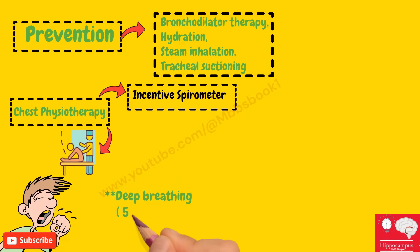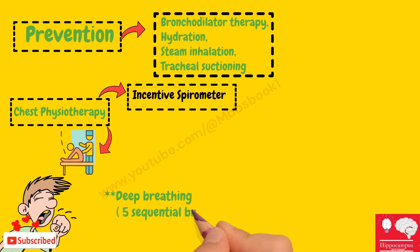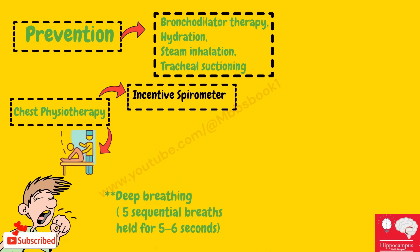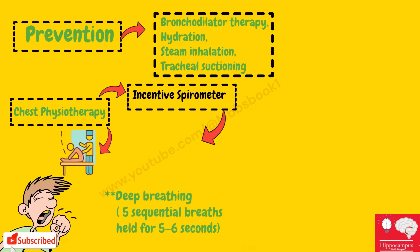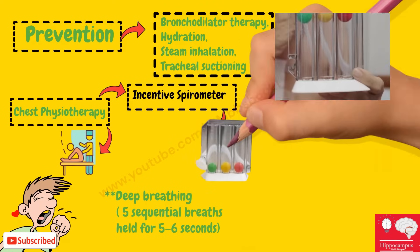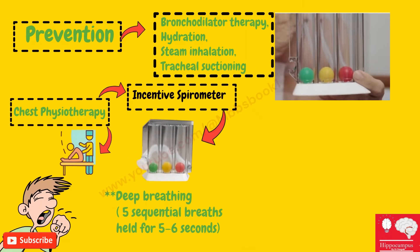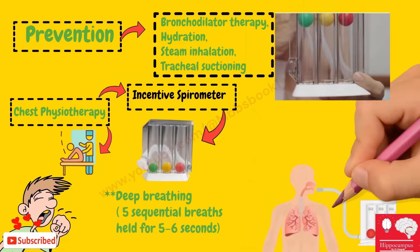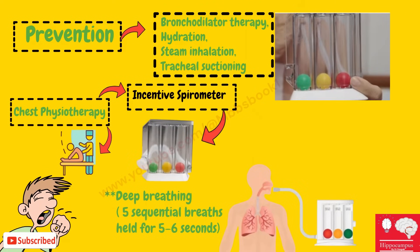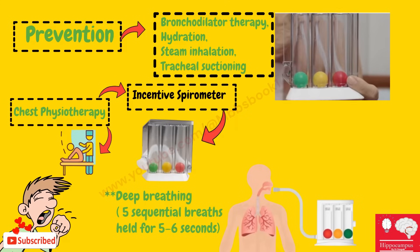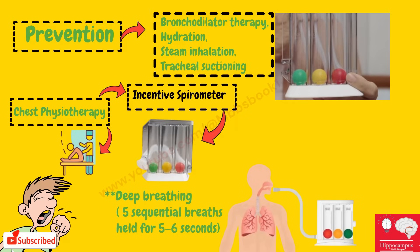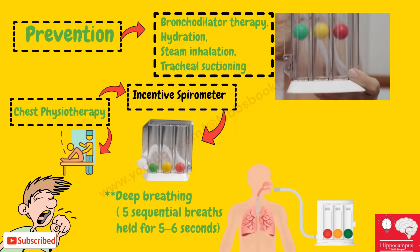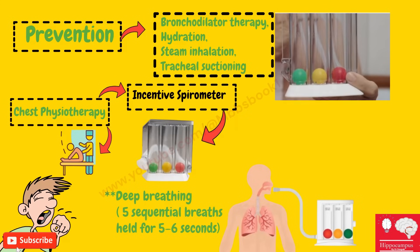Chest physiotherapy is usually carried out by using an incentive spirometer or deep breathing — five sequential breath holds for five to six seconds. This is an incentive spirometer; this device has three balls in it, and you ask the patient to do this exercise so that it can cause lung expansion.